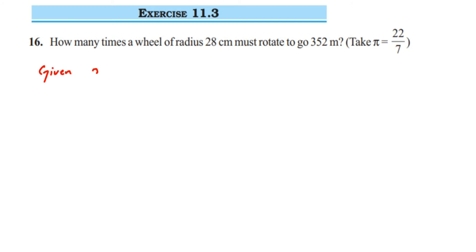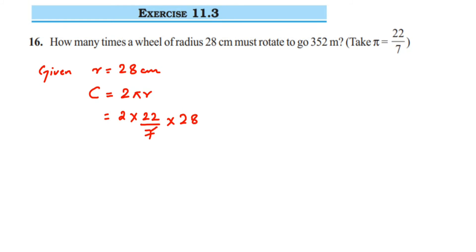The radius r is equal to 28 centimeters. The circumference C equals 2πr. Substituting: 2 × (22/7) × 28. Cancel 7 and 28 — 7 fours are 28 — so this becomes 44 × 4 = 176. The circumference is 176 centimeters.